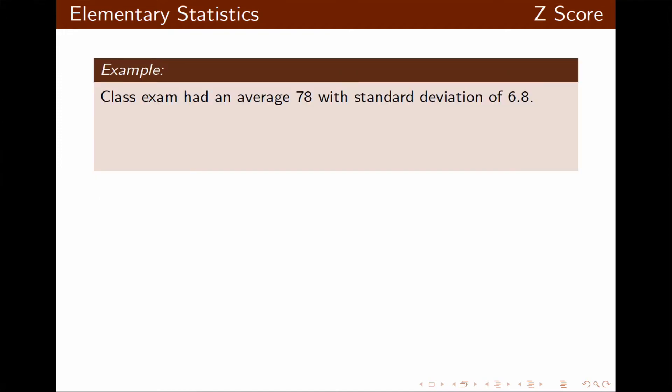Let's look at this example. A class exam had an average of 78 with a standard deviation of 6.8. We want to find the z-score for exam result 90, and we want to find the data element associated with the z-score 2.5. These questions are basically the reverse of each other. First, we need to find the z-score for the exam with score 90. Then the second part is find the data element that has a z-score of 2.5.